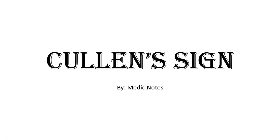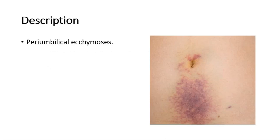Welcome back to another video of Medic Notes. This video is on Cullen's sign. Cullen's sign is used to describe periumbilical ecchymosis, which means bruising at the area surrounding the umbilicus, as shown in this picture.